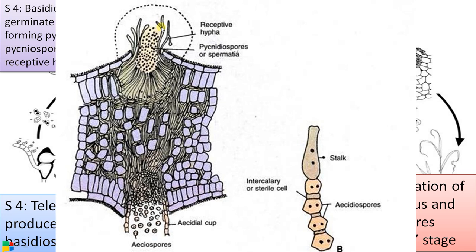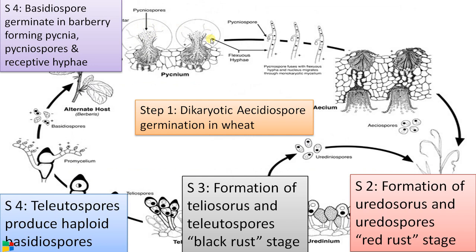The receptive hyphae receives the spermatia. Spermatia of the plus strain are transferred to the receptive hyphae of the minus strain by insects. The spermatia comes in contact with the receptive hyphae, the point of contact dissolves, and this cell then has two nuclei without fusion. This undergoes further division, forming an extensive dikaryotic network downward through the barberry leaf.